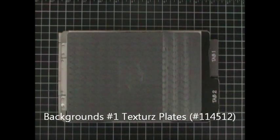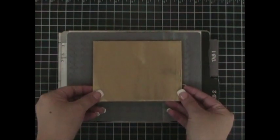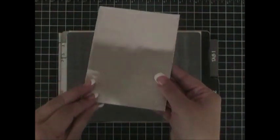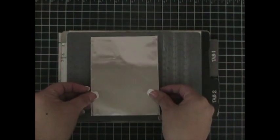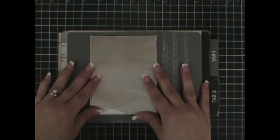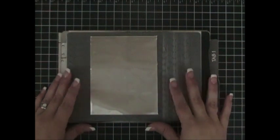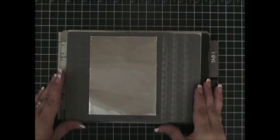I am then going to take my gold nugget piece and I am going to place it color side facing down on top of my textured plate. I am going to line it just the way I want it.